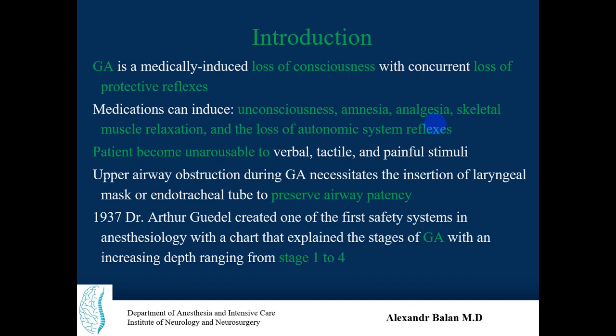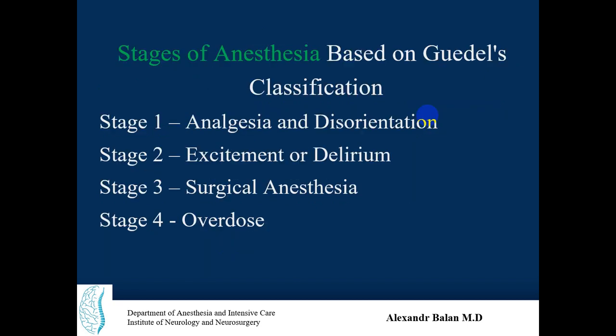Upper airway obstruction occurs during general anesthesia and necessitates the insertion of a protective tube like a laryngeal mask or endotracheal tube to preserve airway patency. Dr. Arthur Guedel developed this system to understand where the patient is and at what level of anesthetic depth. He defined four stages: stage one — analgesia; stage two — excitement or delirium; stage three — surgical anesthesia, the golden stage to achieve; and stage four — overdose, which can result in complications and even death.